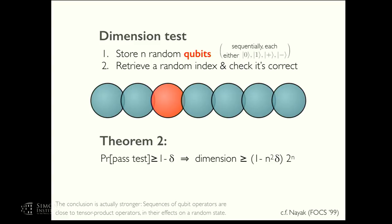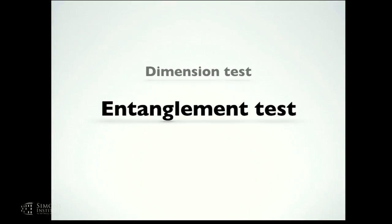So that shows that in theory, many qubits can be packed into just a few dimensions. We also give a test for seeing whether this happens in your real system, for verifying that your particular system does have exponentially many dimensions. The test is actually the same as the classical test I just showed you. Instead of storing N random bits, we store N random qubits, meaning either ket zero, ket one, ket plus or ket minus. Then you retrieve or you measure a random one of those and see that it's what it should have been. So our theorem says that if you pass this test with high probability, then the dimension has to be exponentially large.